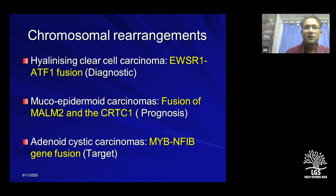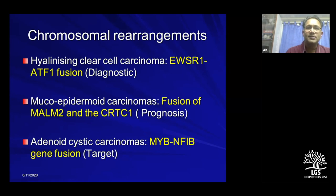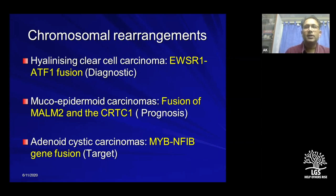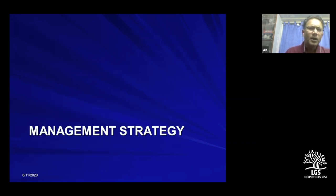Chromosomal rearrangements are increasingly important diagnostically and therapeutically. In hyalinizing clear cell carcinomas, the EWSR1 fusion is diagnostic. In low-grade mucoepidermoid carcinomas, the MAML2 fusion protein indicates better prognosis. In adenoid cystic carcinomas, the MYB-NFIB gene fusion is currently being targeted therapeutically. These chromosomal rearrangements have impacted diagnosis, prognosis, and treatment of salivary gland tumors.